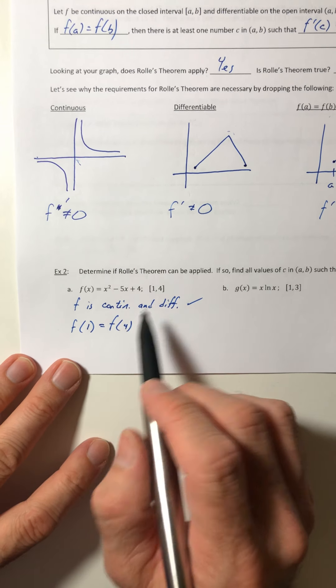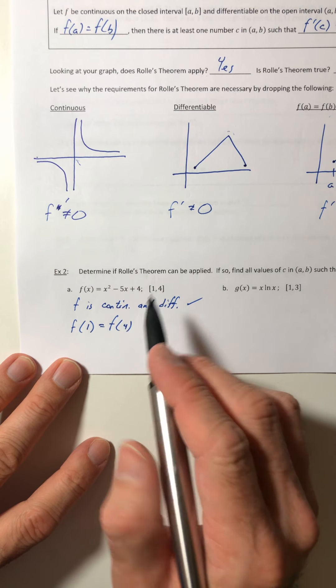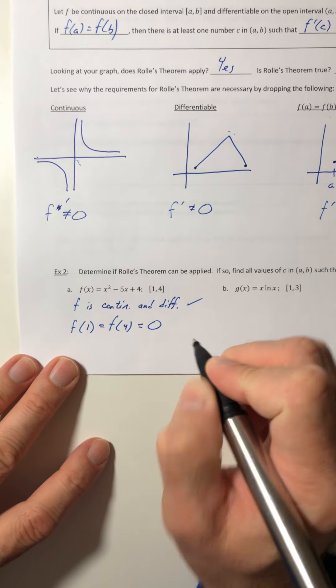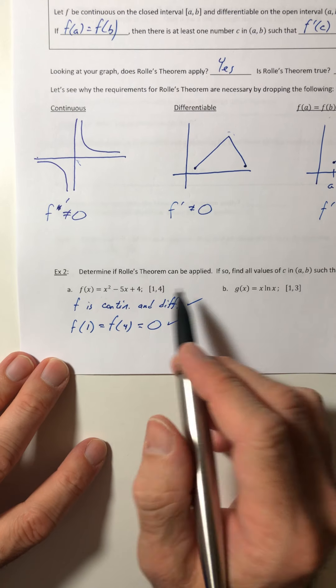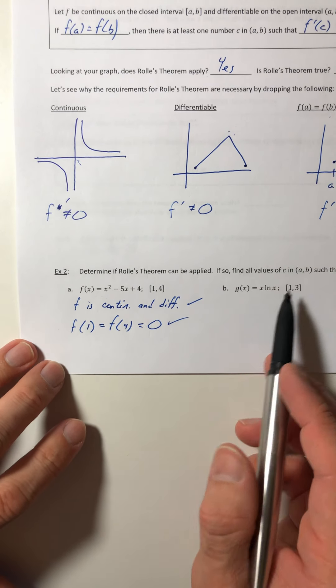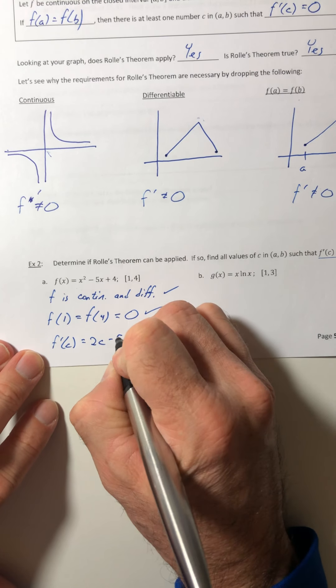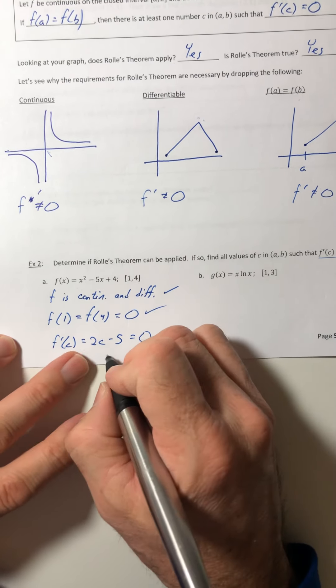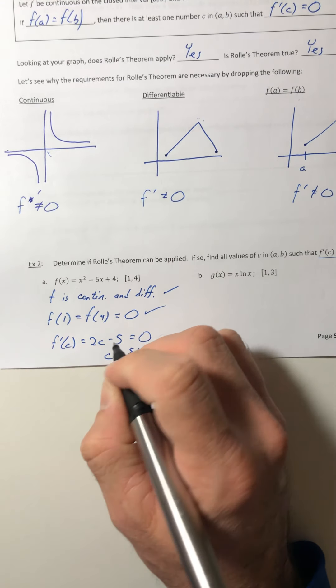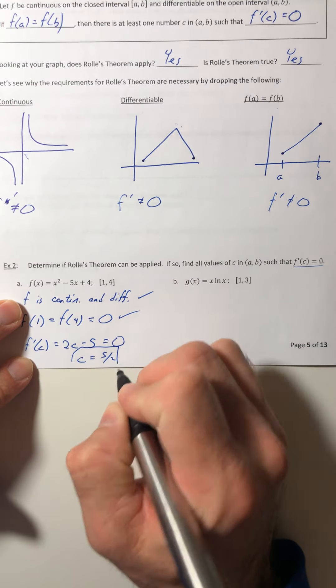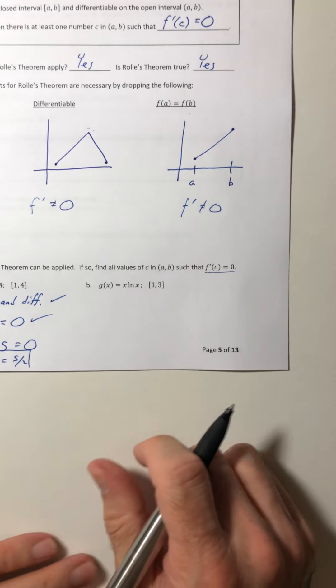So if you plugged in your endpoints into the interval, do they actually come out with the same results? And they do, because if you plugged in one, you get zero, and if you plugged in four, you get zero. So the theorem applies, which means that you can actually solve for where the derivative is equal to zero. So get your derivative. So 2C minus 5, set it equal to zero, and solve for C.